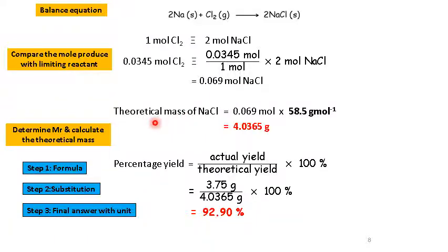Since we need to find the theoretical mass, we need to times the molar mass of sodium chloride. And then we get the mass. So now this is the theoretical mass of sodium chloride. Actual is 3.75. So divided by the theoretical. So times 100%, you get 92.9%.